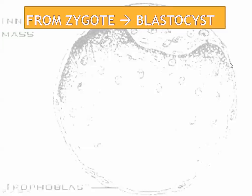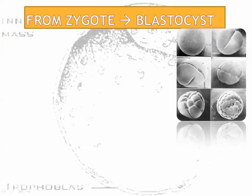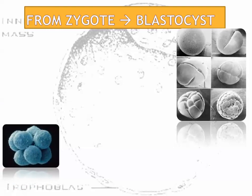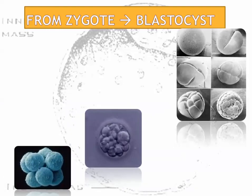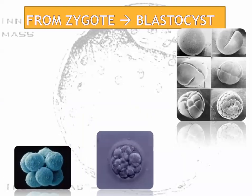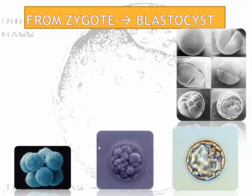And that zygote is going to divide through mitosis — turn into two cells, then four, then eight, then 16, then 32, then 64, then 128, then 256, so on and so forth, until it becomes a ball of cells.